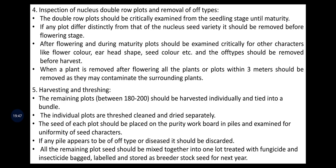200 or fewer progenies should be sown in 200 double rows, in four series of 50 double rows each, with sufficient spacing between and within rows to facilitate examination during crop growth. Breeders should easily identify and discard off-types. Next is inspection of nucleus double-row plots and removal of off-types, which should be done by specialists. Then harvesting and threshing carefully and in isolation to avoid contamination. Individual plots are threshed, cleaned, and dried separately. Seeds of each plot should be placed on a purity work board and examined for uniformity of seed characters. Off-type or diseased piles should be discarded, and all remaining plot seeds should be mixed into one lot, treated with fungicide and insecticide, bagged, labeled, and stored as breeder stock seed for the next year.